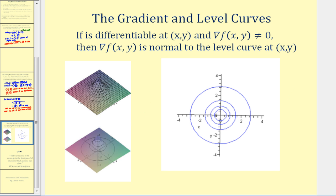I want to mention one more thing about the gradient. The gradient and level curves have a special relationship. The gradient of f of x will always be normal to the level curve. For example, if we want to know the direction of maximum temperature increase or decrease from a given point, the gradient will be normal to the level curve at that point. The direction of maximum increase would be perpendicular to the curve in one direction, and the maximum rate of decrease in the opposite direction.